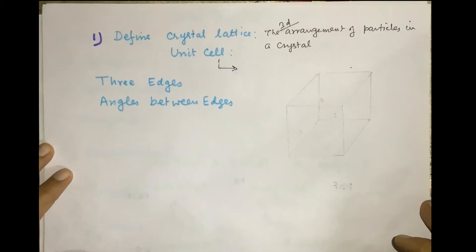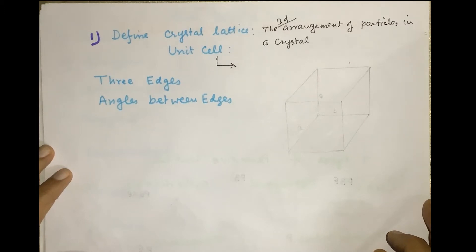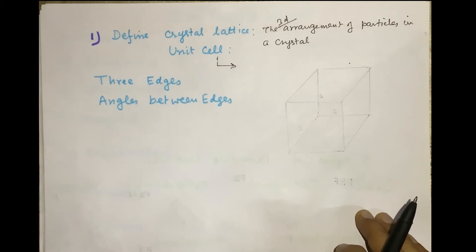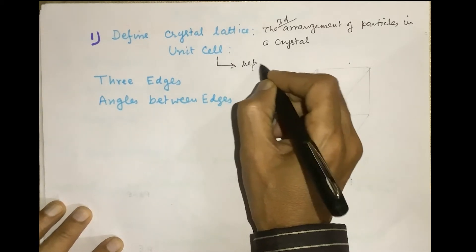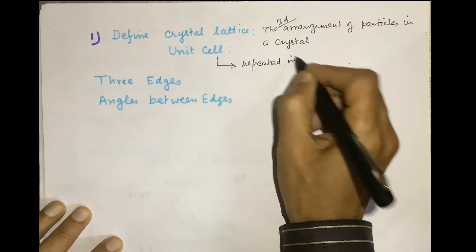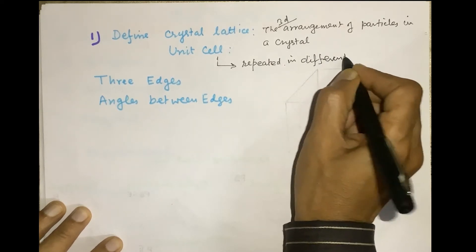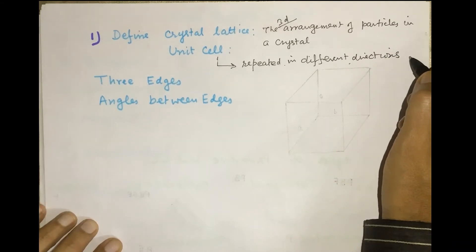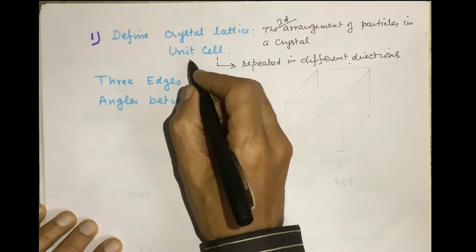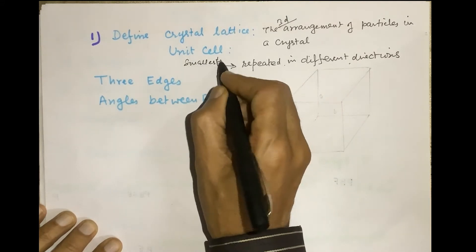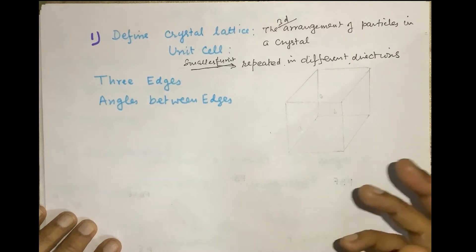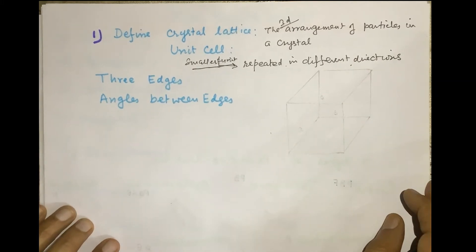What is a unit cell? The unit cell is the smallest portion of the crystal lattice which is repeated in different directions to generate the whole crystal lattice.